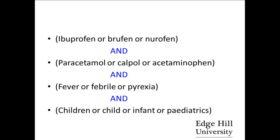Structuring a search in this way — by picking out your key terms, thinking about your synonyms and combining them with OR, then thinking about your different concepts and combining with AND, and then adding in any limits such as language or date — will help you to put a logical and structured search together in order to better your chances of finding exactly what you want.